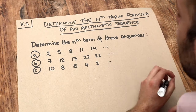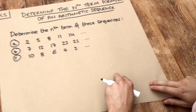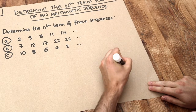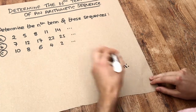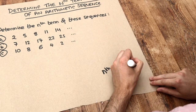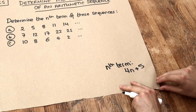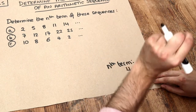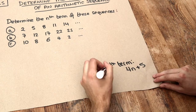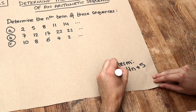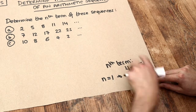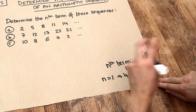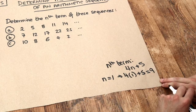What do I mean by the nth term formula? We saw this in a previous video — if the nth term formula was 4n + 5, and I wanted the first term of this sequence, n gives you the position. So if it's the first term, n is 1. When n is 1, we get 4 times 1 plus 5, which is 9. So the first term in this sequence would be 9.